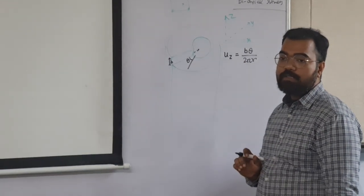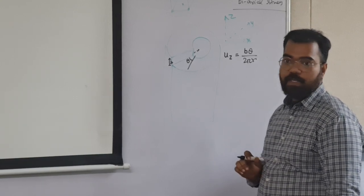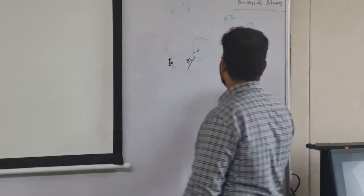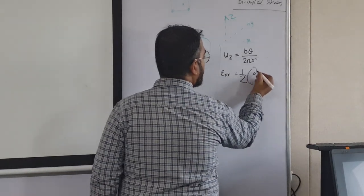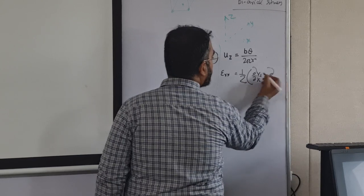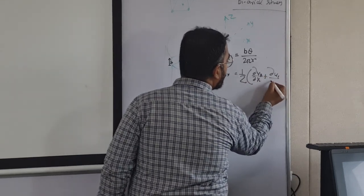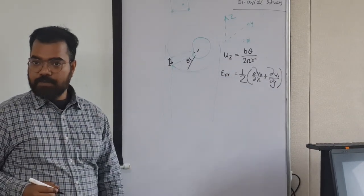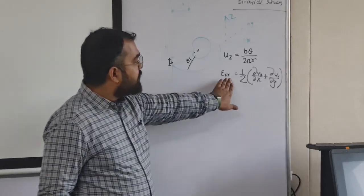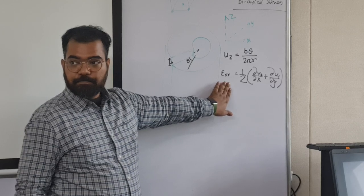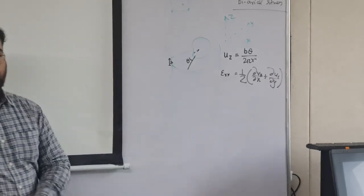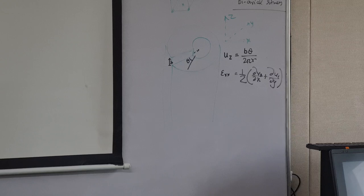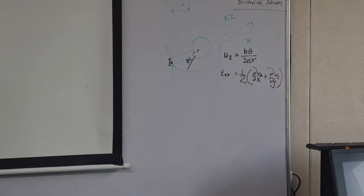Now what and all strain components I will have? Will I have epsilon xx? What is epsilon xx? Epsilon xx is half del u by del x plus u1 sorry u2 and then u1 by del y. Right? That is strain. Right? So what will be the value of epsilon xx? Is there u1? Ux is not there. Zero. Uy is also not there. So epsilon xx is not there.